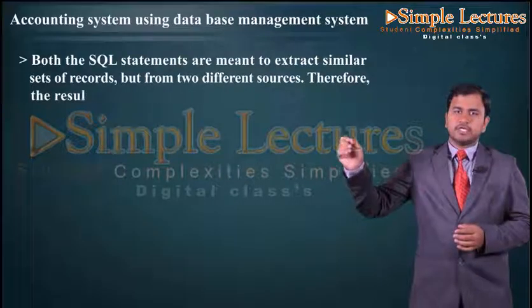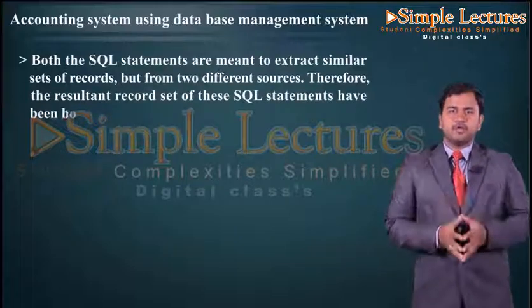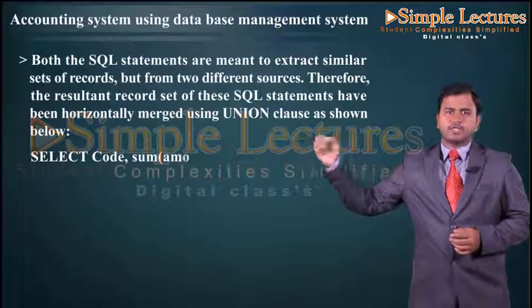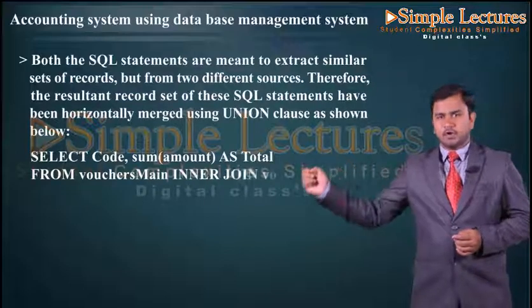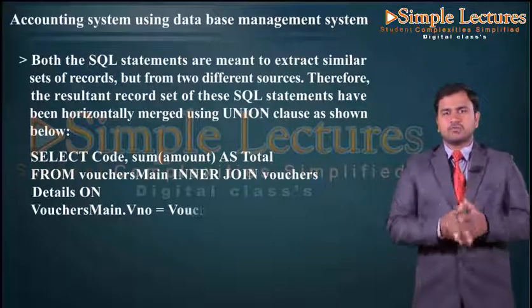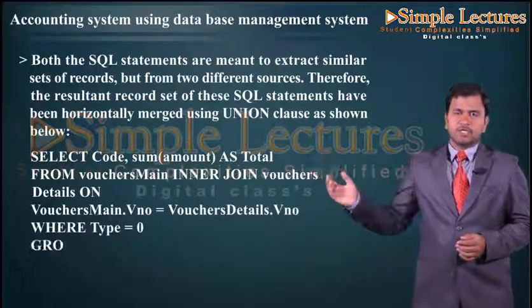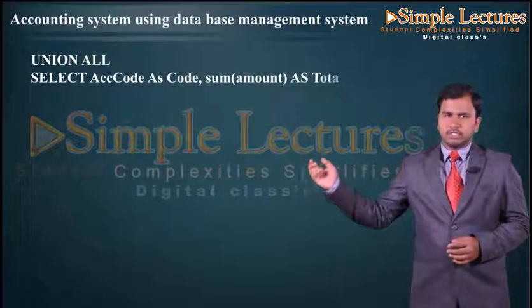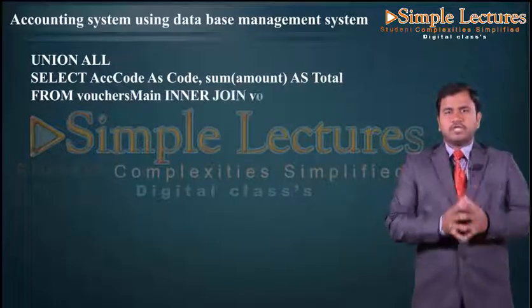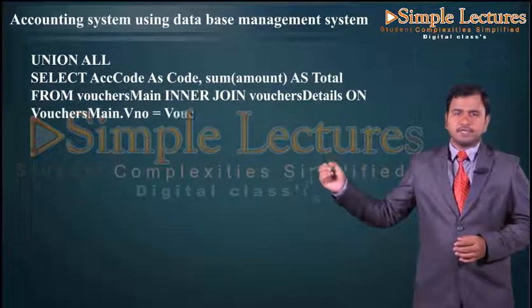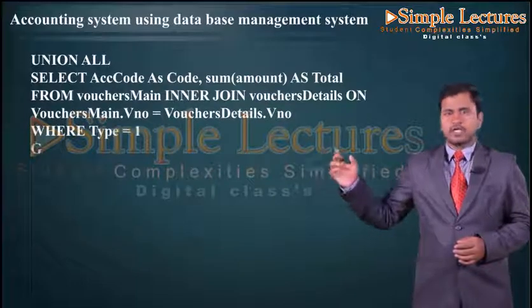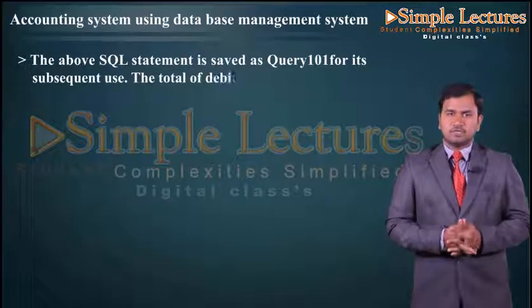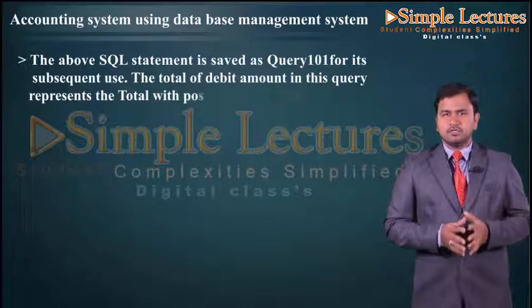Therefore, the resultant record sets of these SQL statements have been horizontally merged using a UNION clause: SELECT code, SUM(amount) AS total FROM voucher_main INNER JOIN voucher_details ON voucher_main.voucher_number = voucher_details.voucher_number WHERE type = 0 GROUP BY code UNION ALL SELECT account_code AS code, SUM(amount) AS total FROM voucher_main INNER JOIN voucher_details ON voucher_main.voucher_number = voucher_details.voucher_number WHERE type = 1 GROUP BY account_code. This SQL statement is saved as Query 101. The total of debit amount in this query represents the total with positive amounts.